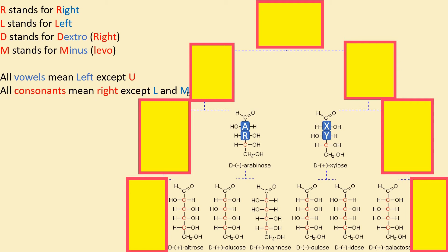For xylose, the first two letters are X and Y. X is a consonant, so the hydroxyl group is on the right side. Y is treated as a vowel in our rule, so the hydroxyl group on that carbon is on the left side. Altrose is an exceptional case — we skip the first letter A and start from L, taking the three letters L, T, R. L means left, T is a consonant so OH is on the right, and R means right.